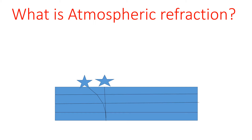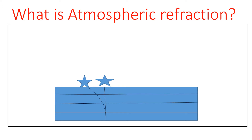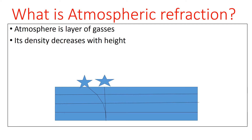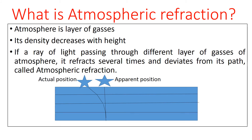Now, what is atmospheric refraction? As we know, atmosphere is a layer of gases and its density decreases with height. If a ray of light passes through different layers of gases of the atmosphere, it refracts several times and deviates from its path. This phenomena is called atmospheric refraction.